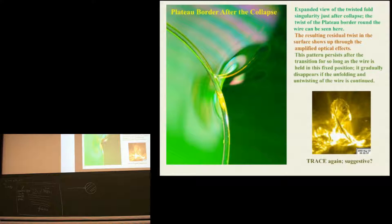After the collapse, the plateau border is twisted round the frame in the opposite sense, as shown here. And the caustic here, this is the caustic, is a consequence of the locally concentrated twist of the surface. So here's the plateau border after the collapse. It's a left-handed twist round the axis of the wire. Twist round the wire can be seen. The resulting residual twist of the surface shows up through the amplified optical effect. This pattern persists after the transition for so long as the wire is held in this fixed position, but it gradually disappears if the unfolding and untwisting of the wire is continued.